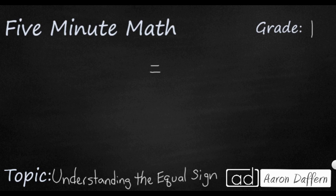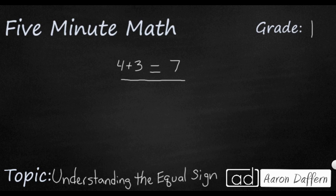When we're thinking of an equal sign, what we normally think of is we'll do something on one side — so we might do 4 plus 3 — then we'll have the equal sign, and then the answer will go over on the other side, so we would say 4 plus 3 equals 7. But one way to think about this is if you have a balance. If you've ever used a balance in science, or maybe been on a seesaw on a playground — if both sides are the same, the balance is straight across, horizontal. But if one side is heavier, it starts to tip one way. The equal sign is like a balance, and it needs both sides to be exactly the same.